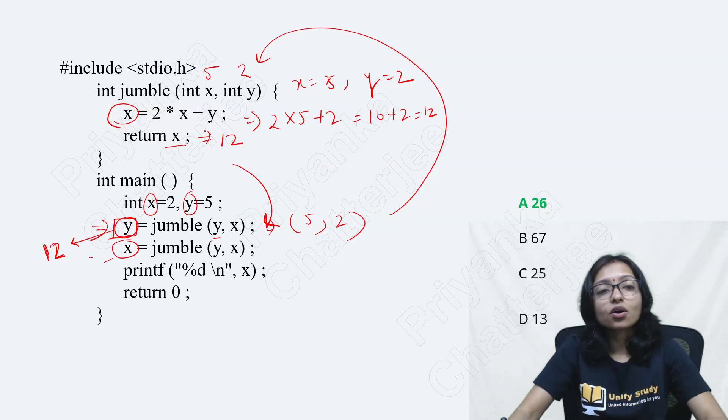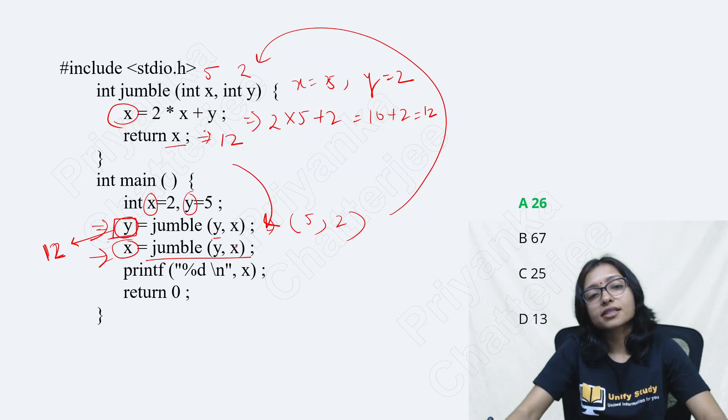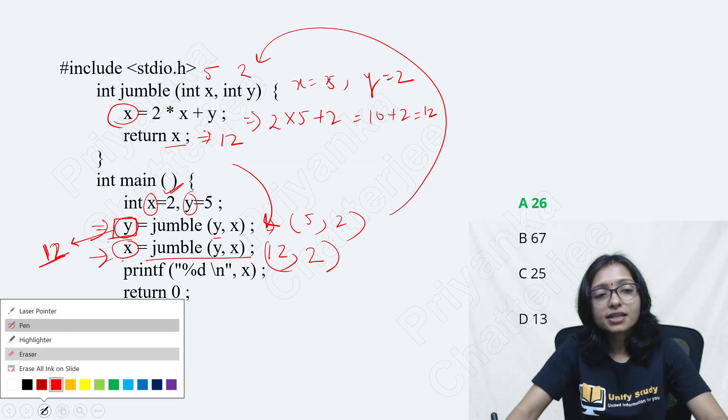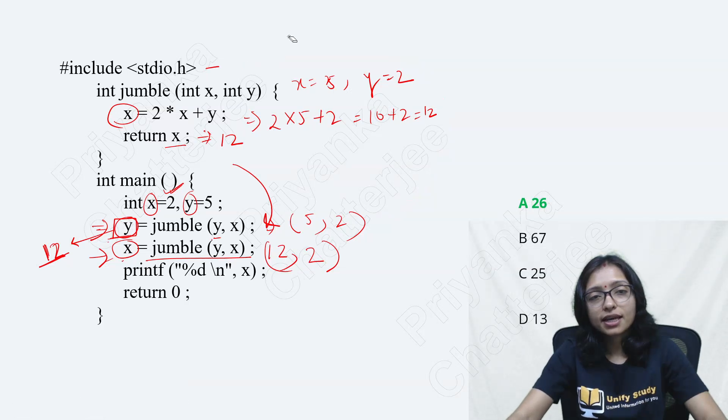Now, whenever you are calling into the next line, this jumble Y, X. So Y value is 12 here. X value is as it is, that is 2. Don't be confused with X and Y. Here, just see that. What is the value here? 12. X was already 2. So that is 2. 12 and 2 you are passing here now. So whenever you are passing here 12 and 2, just erase this, and then do the calculation again.